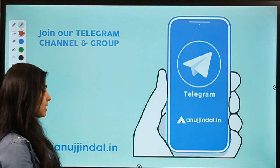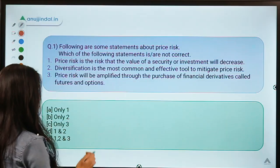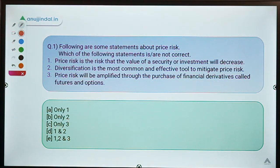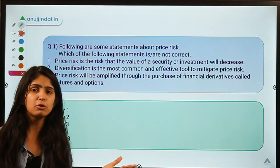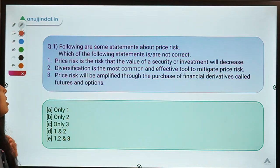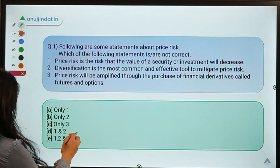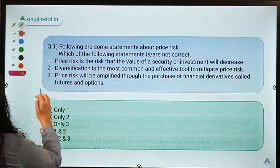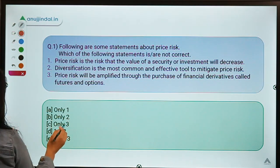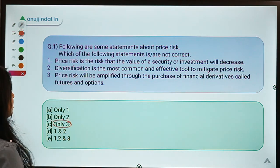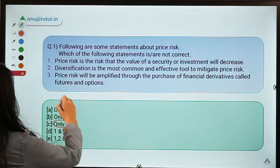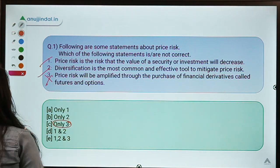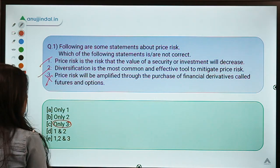Are you ready for question number one? This question talks about price risk — it gives you some statements about price risk and you have to select the ones which are not correct. The correct option for this question is option C, which means only statement three is incorrect while the rest are correct.